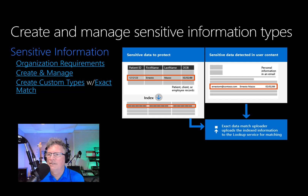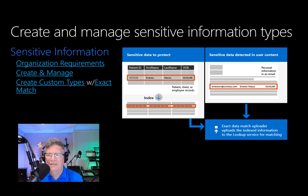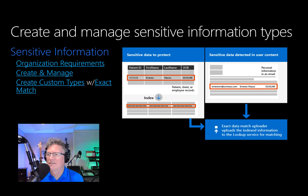There are two ways to create a new sensitive information type. You can create it from scratch, where you fully define all elements, or you can copy and modify an existing sensitive information type. Such custom sensitive information types meet the business needs for many organizations. But what if you wanted to create a custom sensitive information type — also known as SIT — that uses exact data values instead of one based on generic patterns?